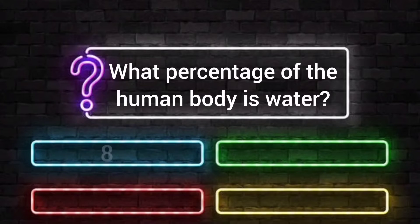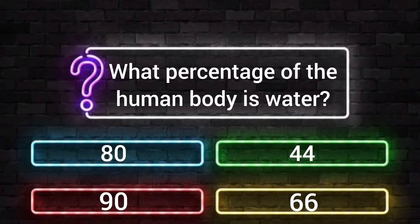What percentage of the human body is water? Option A: 80. Option B: 44. Option C: 90. Option D: 66. Your time starts now.